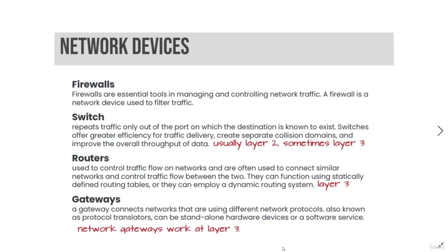Routers are used to control traffic flow on networks and are often used to connect similar networks and control traffic flow between the two. They can function using statically defined routing tables or employ a dynamic routing system. Routers operate at Layer 3. A gateway connects networks that use different network protocols; they are also known as protocol translators and can be standalone hardware or software devices. Network gateways also work at Layer 3.